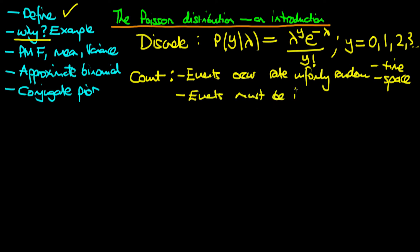What does independence mean here? It means that the probability of another event occurring given that a first event has occurred is no different to the unconditional probability of the second event occurring. So what are some examples we can think about for the Poisson distribution?